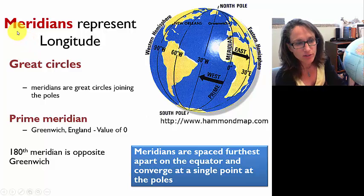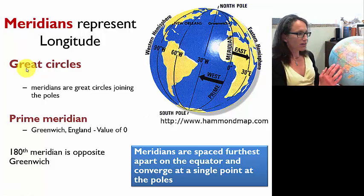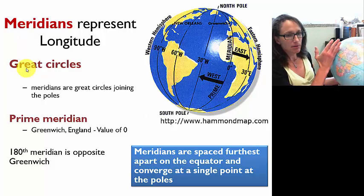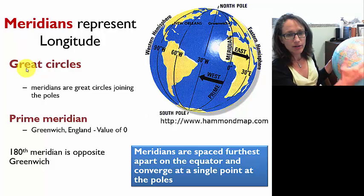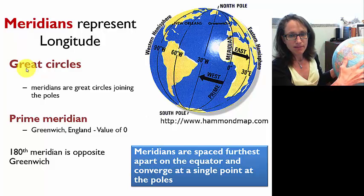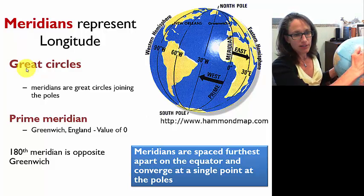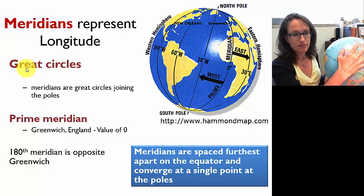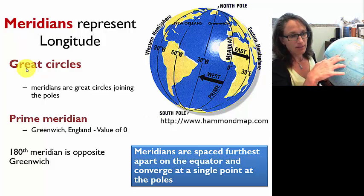Let's talk about longitude first. Our meridians represent longitude. All meridians are what we call great circles — if we took a meridian and sliced a plane through the globe at the meridian, we would create two equal hemispheres, so a great circle cuts a sphere into two equal halves. Zero degrees of longitude is at the prime meridian, which goes through Greenwich, England, and has a value of zero degrees of longitude.